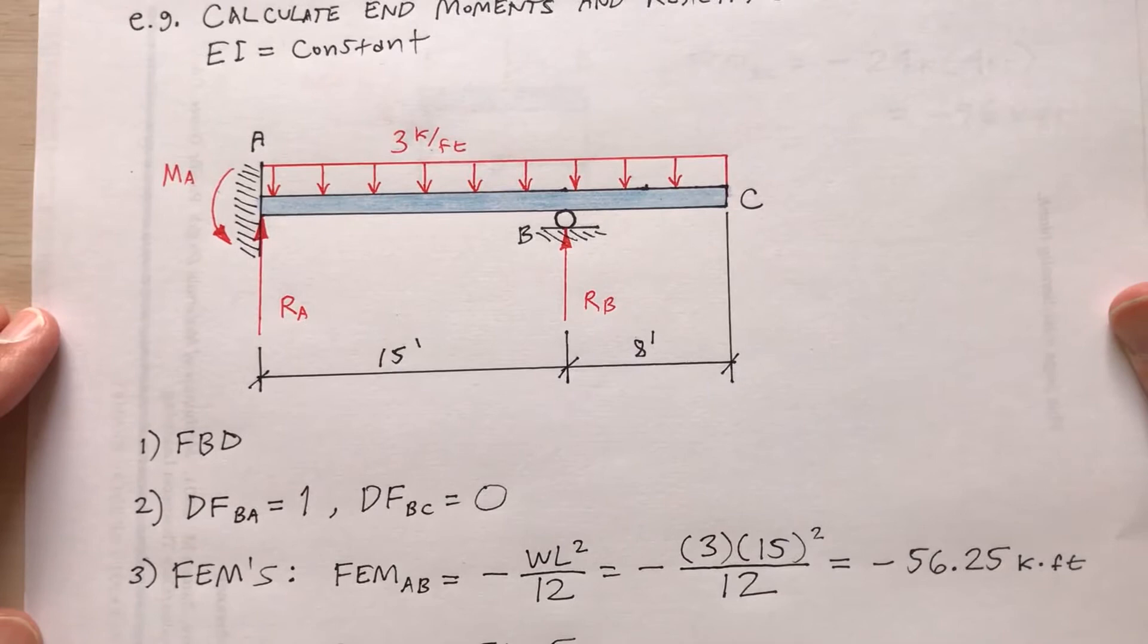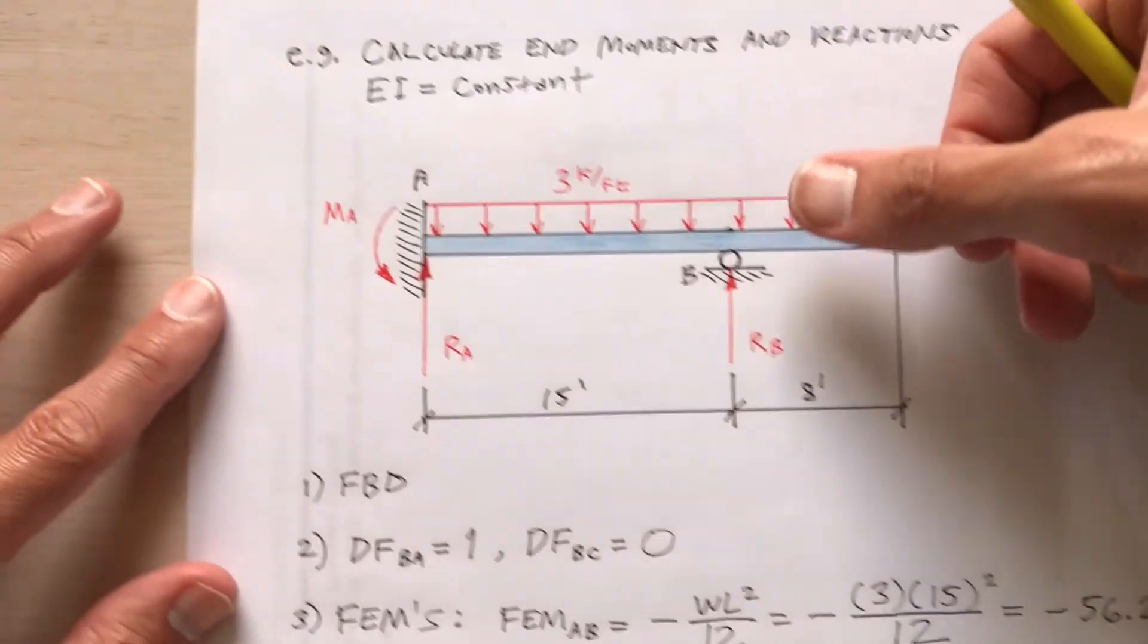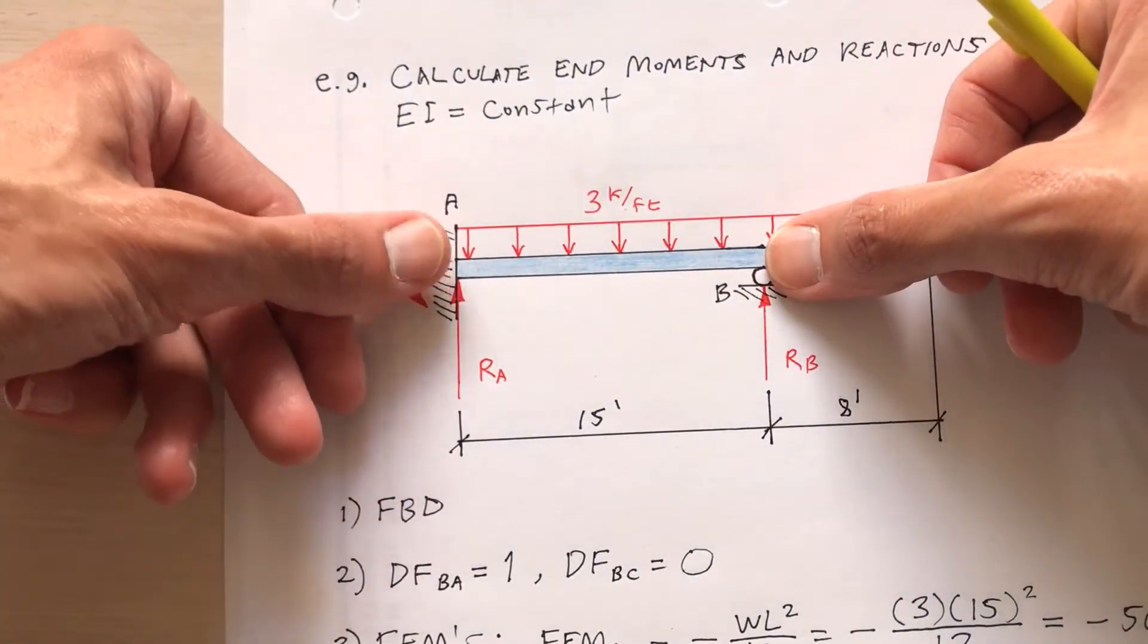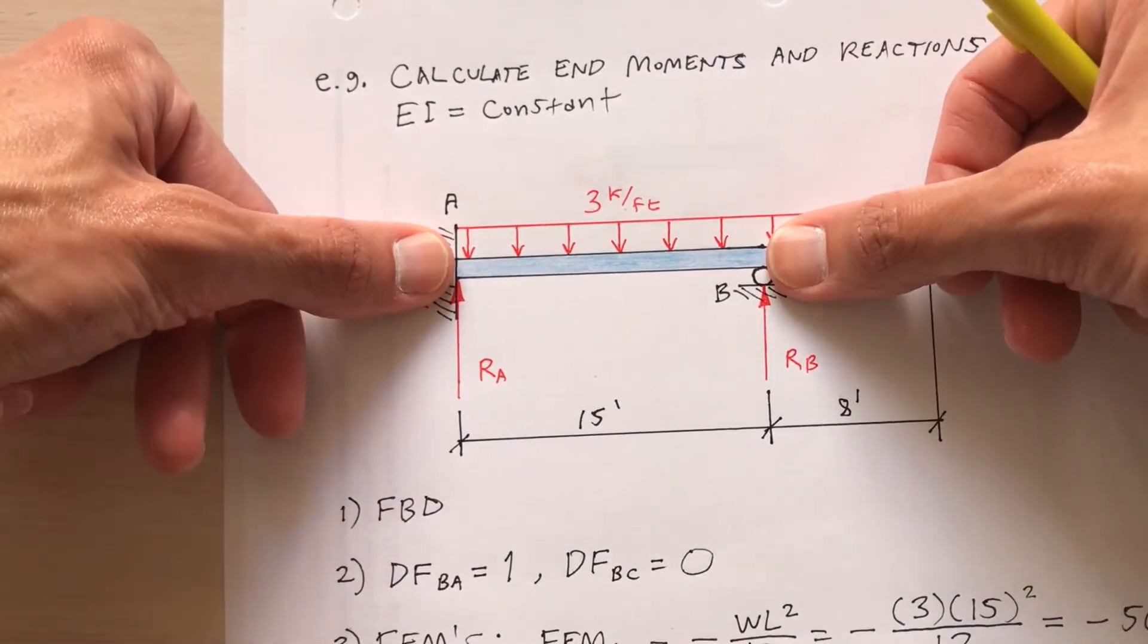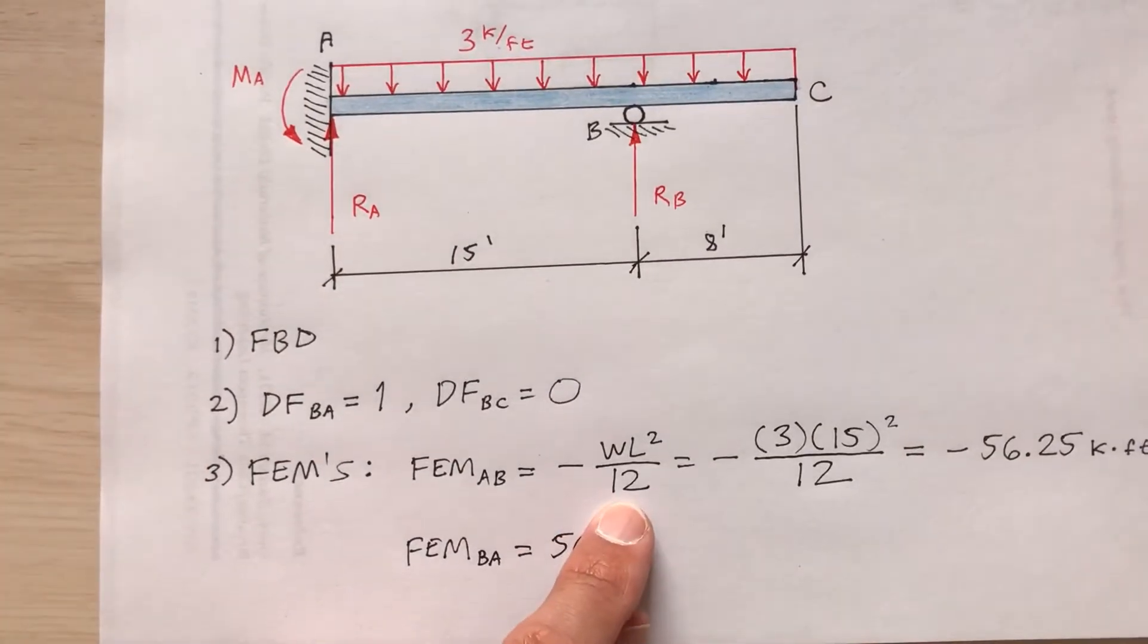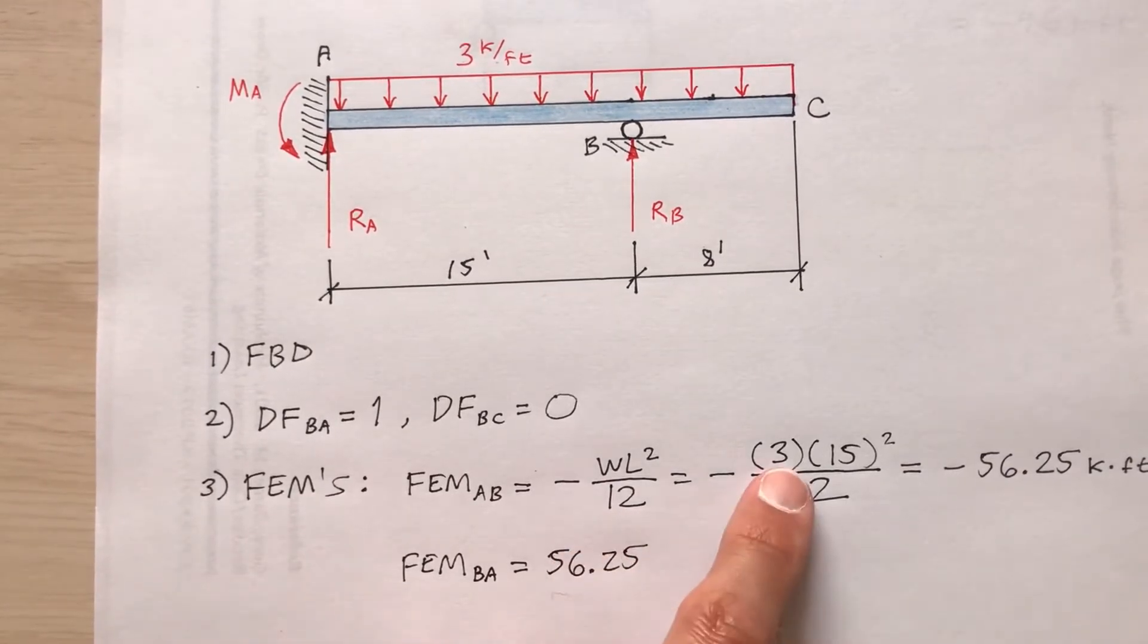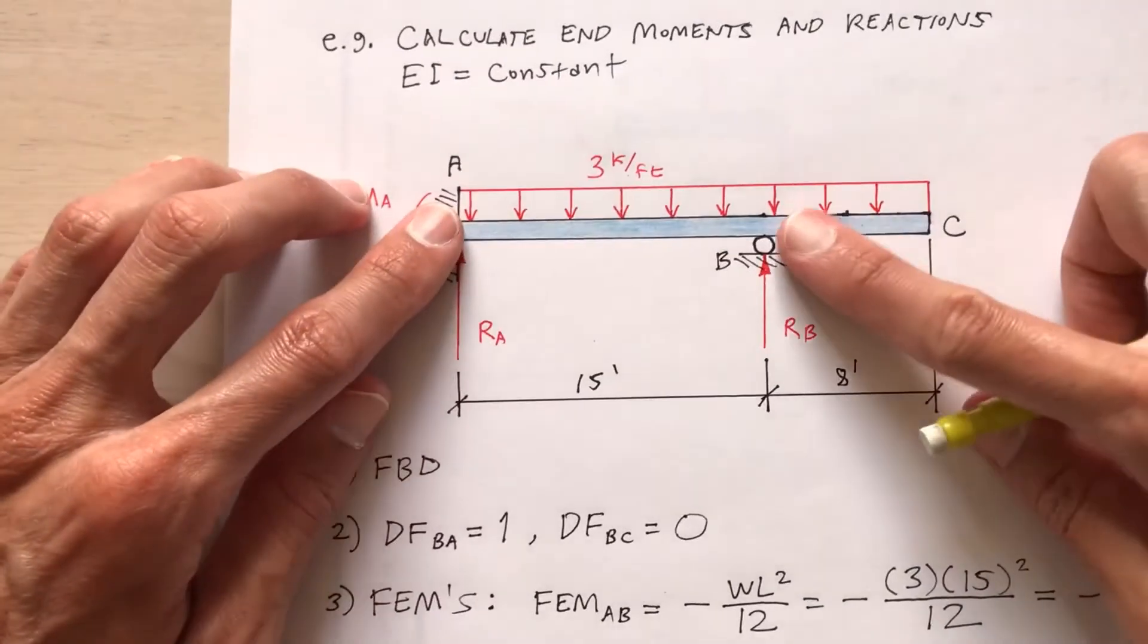Fixed end moments for AB and for BA. W L squared over 12, so I'm modeling this as fixed at both ends. There's a span of 15 feet, three kips per foot. You can find this in the appendix of an introductory structural analysis book. Distributed load three, span 15 between A and B.